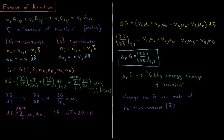What factors determine the extent of reaction? The Gibbs energy of our system is a function of temperature, pressure, and the number of moles of each chemical species in the reaction mixture. The change in Gibbs energy is its partial derivative with respect to temperature times dT, plus for every chemical species, the partial derivative of Gibbs energy with respect to moles of that species times the change in moles, holding all other variables constant.